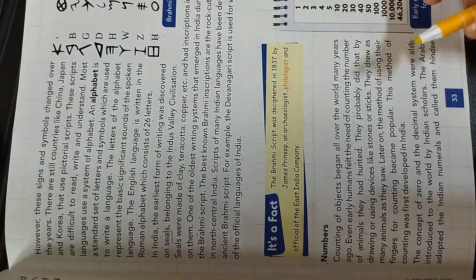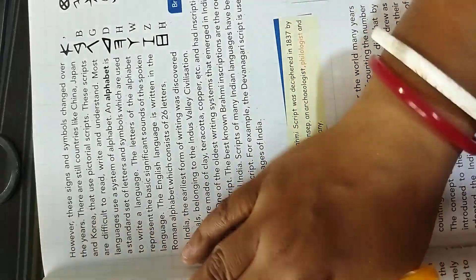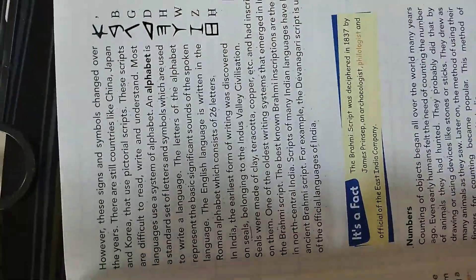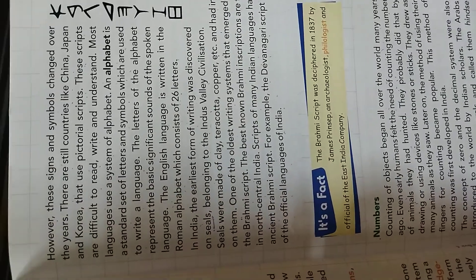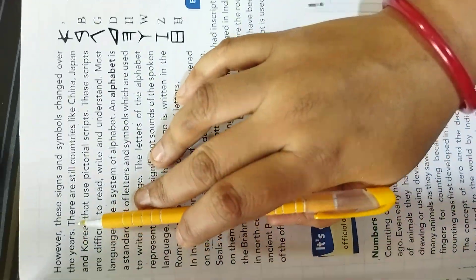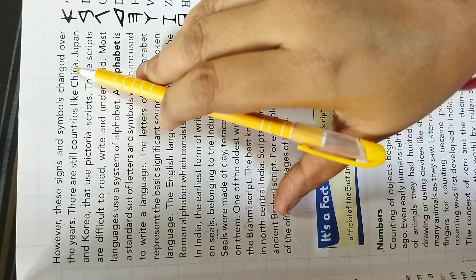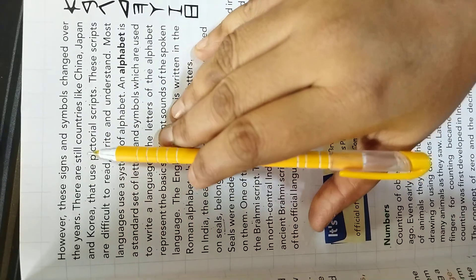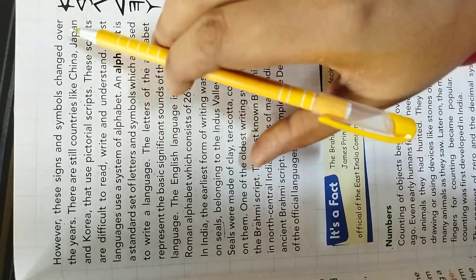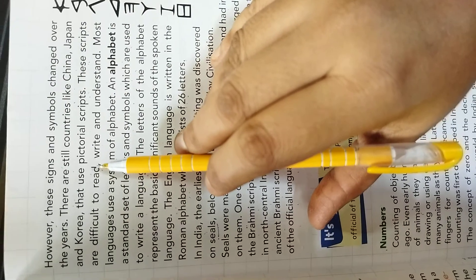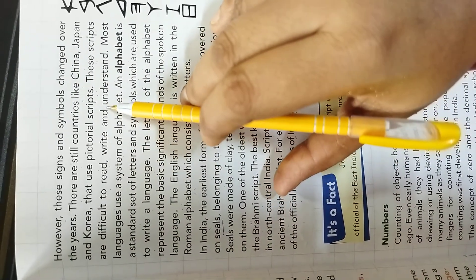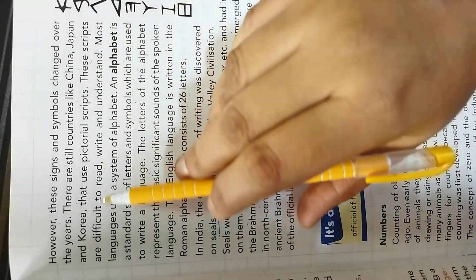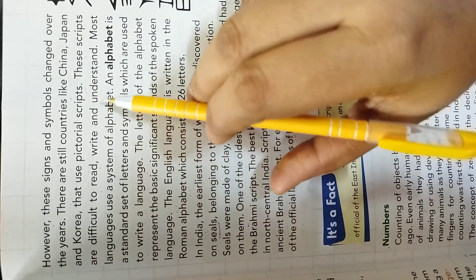This type of hieroglyphic pictorial picture they communicated each other. Now open piece number 33. This is the picture of Brahmi script. However, these sign and symbols change over the year. There are still countries like China, Japan and Korea. They use pictorial script. These scripts are different to read, write and understand.